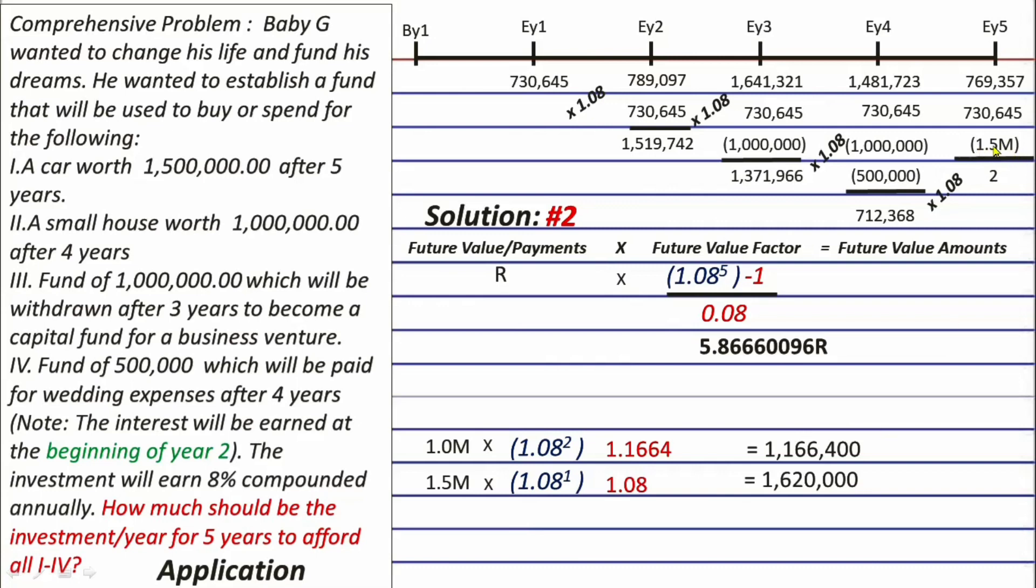And lastly, we have 1.5 million here, times 1.08 raised to the power of 0, or 1, because any number raised to the power of 0 will always be 1. So, 1.5 million times 1 equals 1.5 million. And logically, besides that, you don't actually need to solve the 1.5 million because this 1.5 million is already 1.5 million at the end of year 5.